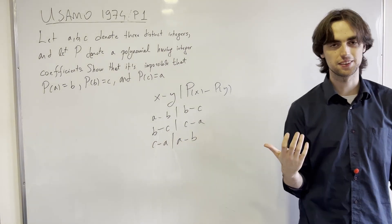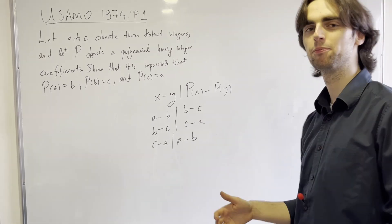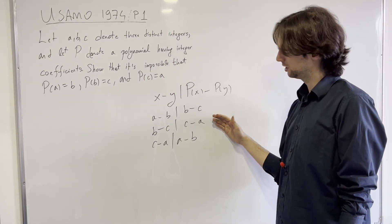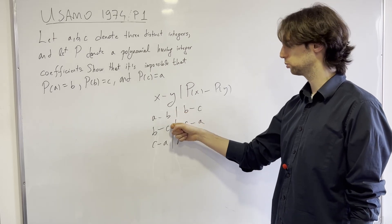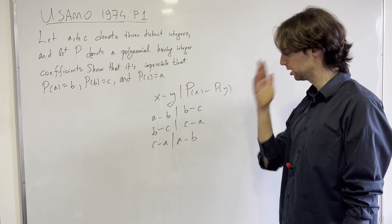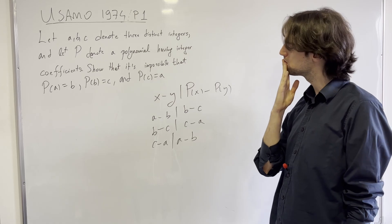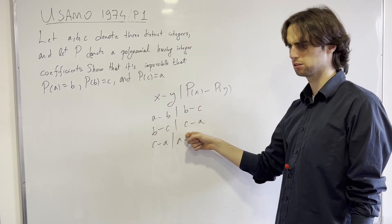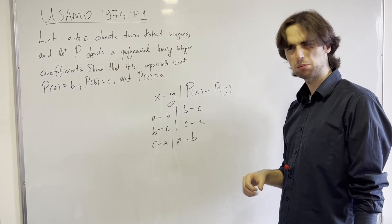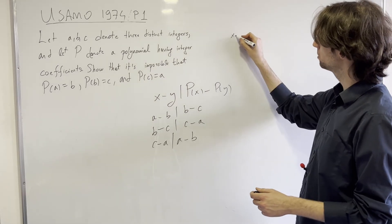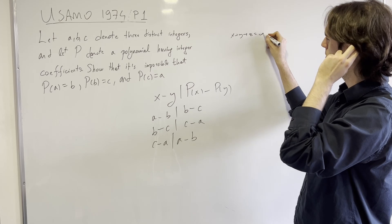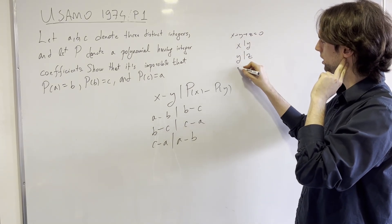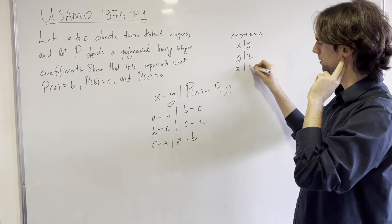Now what do we have here? These are some integers x, y, and z whose sum is equal to 0. And I have x divides y, y divides z, z divides x.